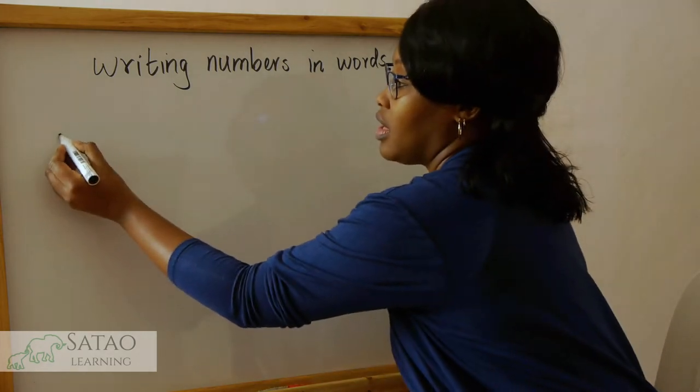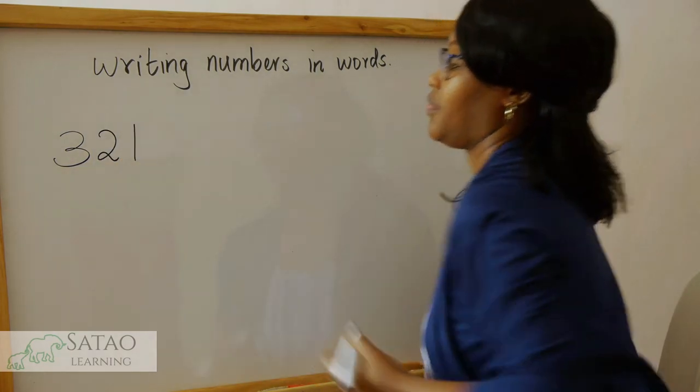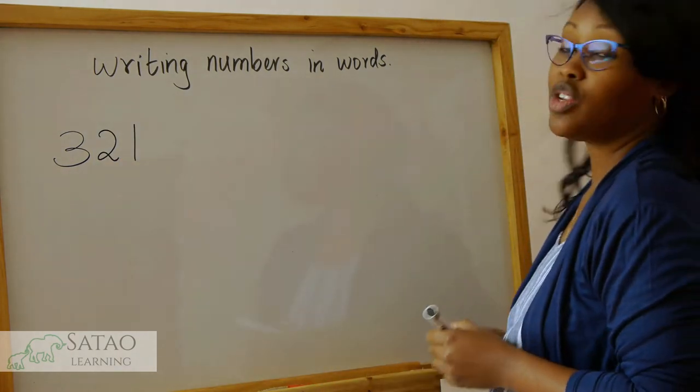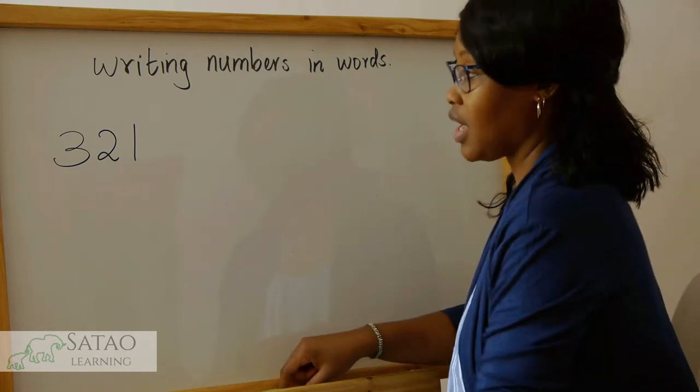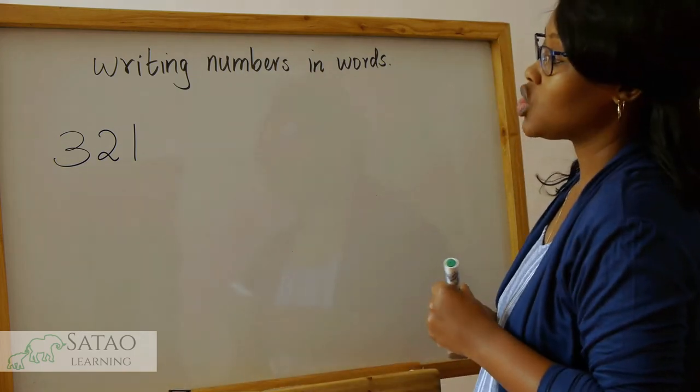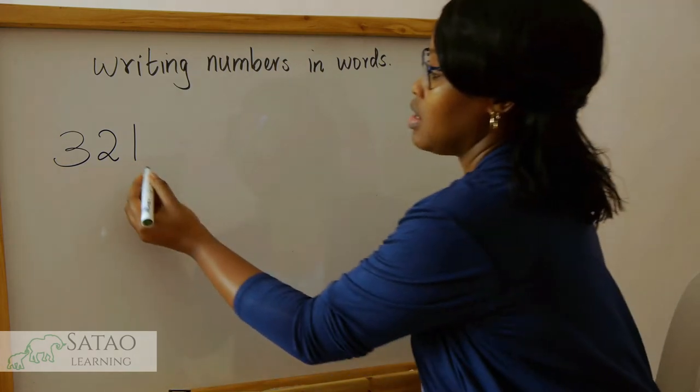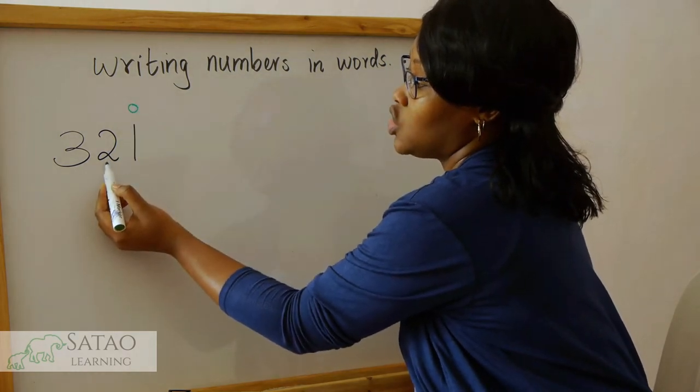So for example, if you have a number 321 and you've been asked to write it in words, what do you do? The first step is to think about the place values. So in this number, 1 is in the ones place, 2 is in the tens place, and 3 is in the hundreds place.